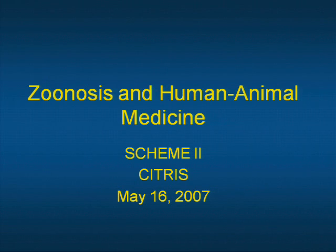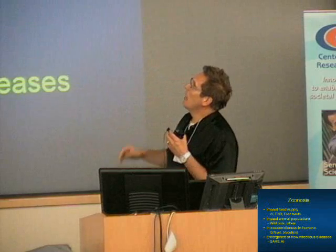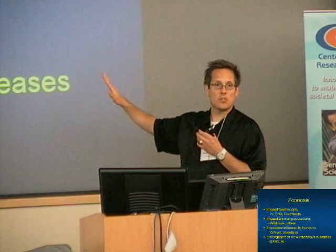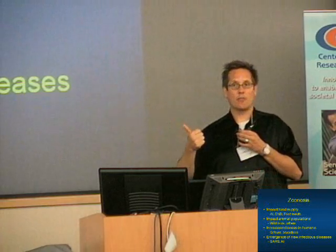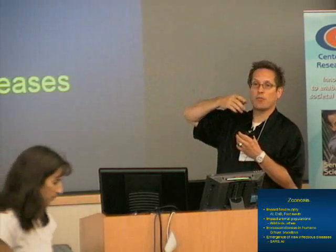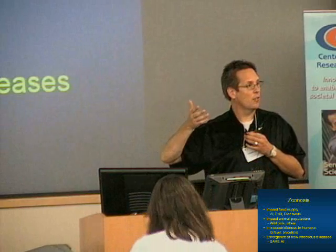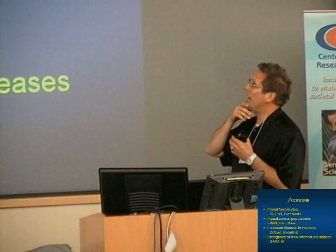I'll talk a little about the side where we function, why it's bad, and show you a couple pictures of where we run into issues. Obviously there are lots of bad things with zoonoses — they can impact our food supply. With avian influenza, if you have to cull a few billion birds, that becomes a problem with food supply, not so much in our country but in other countries.